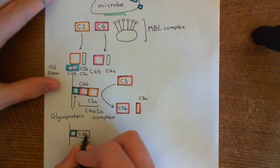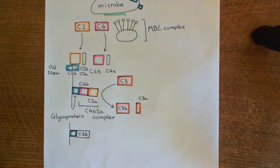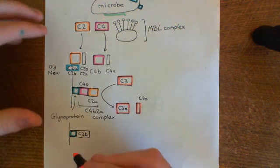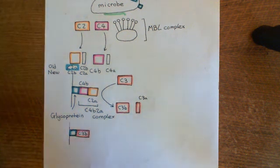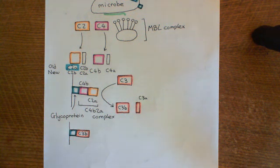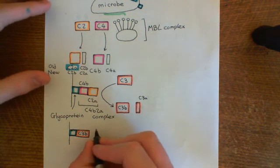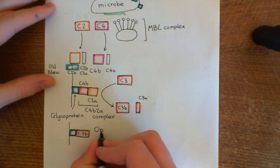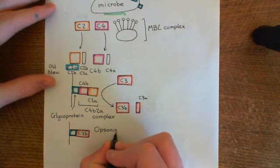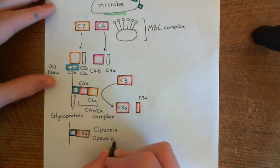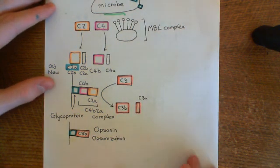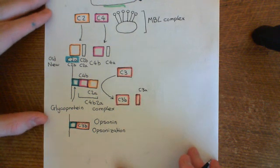Let's draw another glycoprotein on the surface of our microbe — another blue box representing a glycoprotein on the surface of our microbe. The C3B protein fragment can stick onto this glycoprotein. What can happen is you're going to end up coating the microbe in C3B — it's going to have C3B stuck all over it. C3B is what's known as an opsonin, and it's going to take part in a process known as opsonisation.